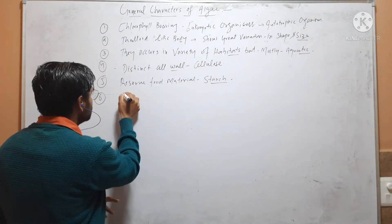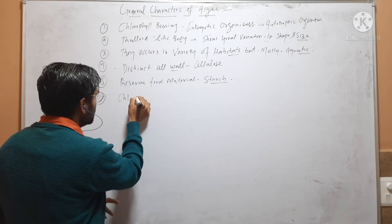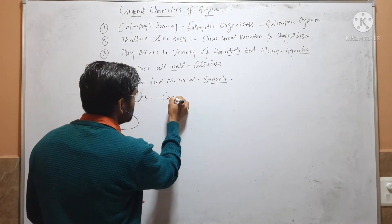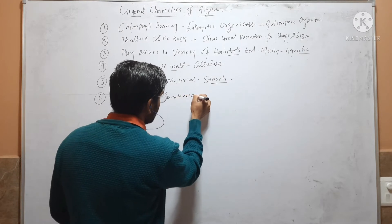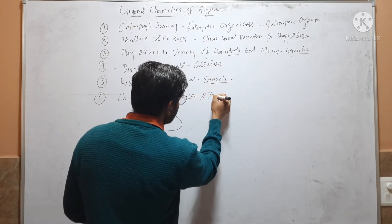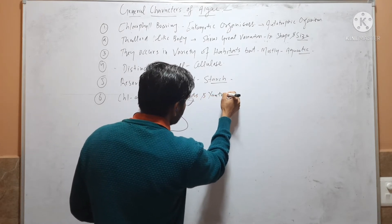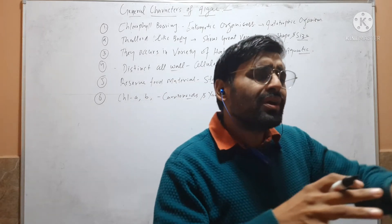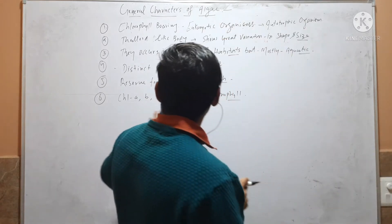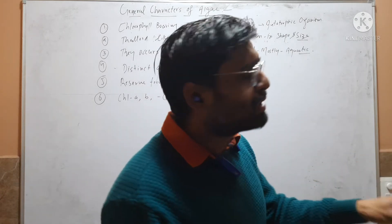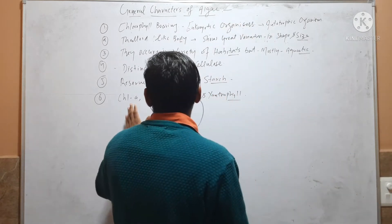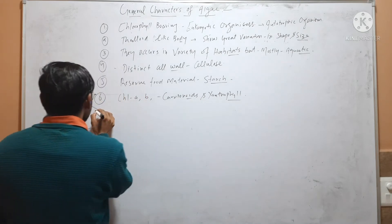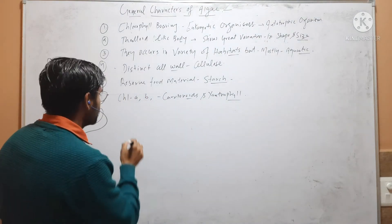Sixth, algae have pigments including chlorophyll a, chlorophyll b, carotenoids, and xanthophylls. However, in some groups the pigments may vary according to the group of algae, but these are the main pigments found.